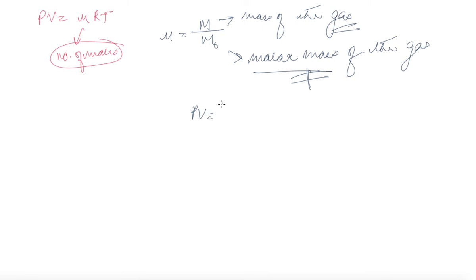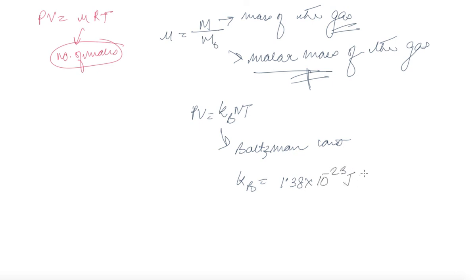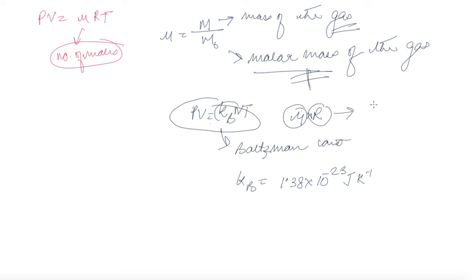The formula can also be written as PV = k_B * N * T, where k_B is the Boltzmann constant with a value of 1.38 × 10⁻²³ joule per kelvin. In PV = mu*R*T, the product mu*R can be converted using the Boltzmann constant.